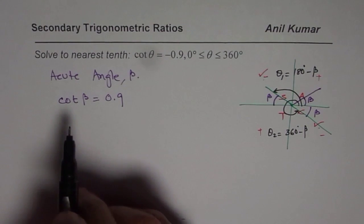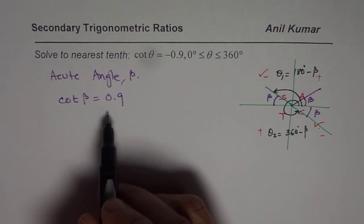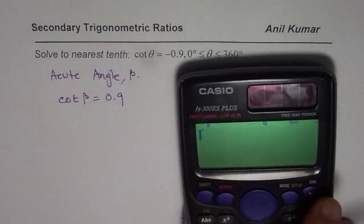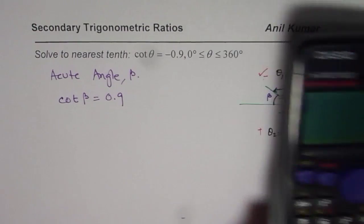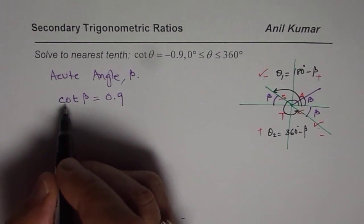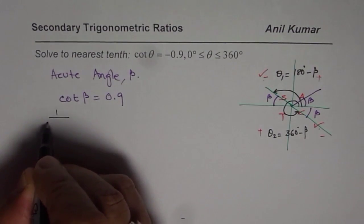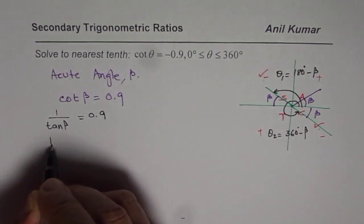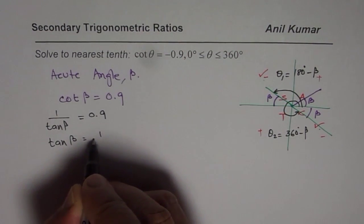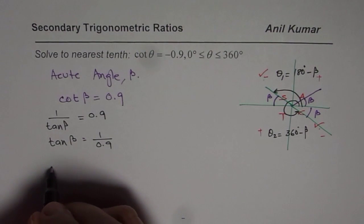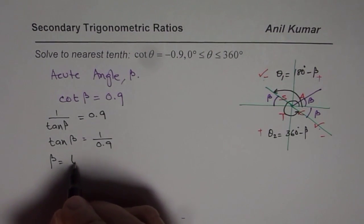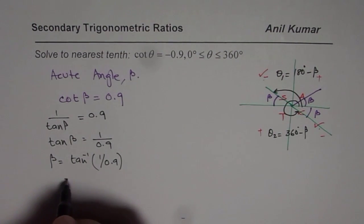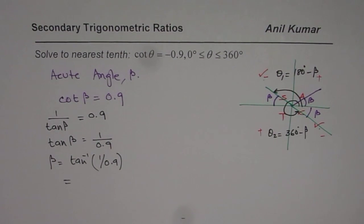Now let us get back to the problem. Cotangent of β is 0.9. But how to find β? We do not have cotangent in our calculator. We have sine, cosine and tan. So we have to write cot as tan. So 1 over tan. We will write 1 over tan β equals to 0.9. Or we can say tan β equals to 1 over 0.9. And then, β is equals to tan inverse of 1 over 0.9.